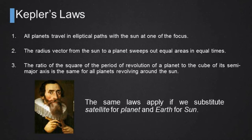We can also recall Kepler's laws. Kepler's a Dutch astronomer who derived these laws from astronomical observations, so he applied these laws to planets. The first one says that all planets travel in elliptical paths with the Sun at one of the focus. The second that the radius vector from the Sun to a planet sweeps equal areas in equal times. The third one is the ratio of the square of the period of revolution of a planet to the cube of its semi-major axis is the same for all planets revolving around the Sun. Of course, these laws apply also if we substitute satellite for planets and Earth for Sun.